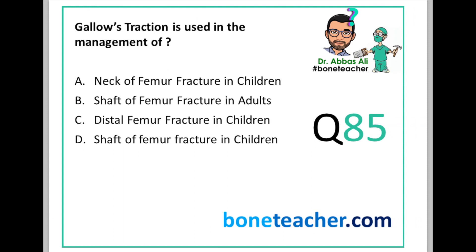The correct answer is (d) — gallows traction is used in the management of shaft of femur fracture in children. Quick review: less than six months — Pavlik harness; less than two years — gallows traction; two to five years — hip spica cast; five to ten years — flexible nails; more than ten years — treat like an adult with intramedullary interlocking nails.